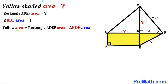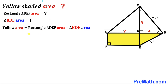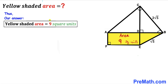Here's the final step. The yellow shaded region area equals the rectangle area plus the triangle area: 8 plus 1 equals 9. Therefore the area of the yellow shaded region is 9 square units.